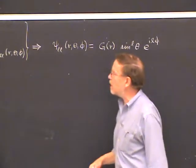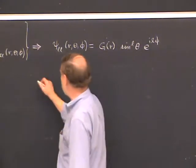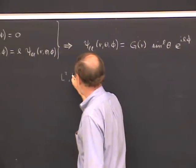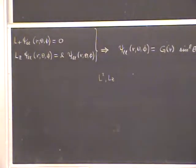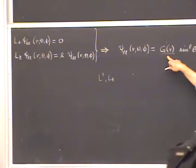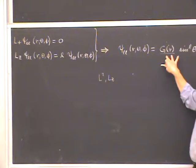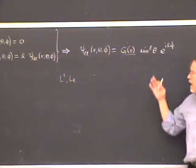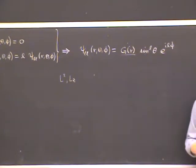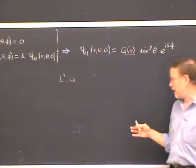What this means is that the operators L-squared and Lz, taken by themselves, do not form a complete set of commuting observables for a wave function in three dimensions. Since G(r) is arbitrary, the simultaneous eigenstates are degenerate — you can choose any radial wave function you want. To have a unique specification of basis states, you need an additional index or an additional observable to make a complete set.